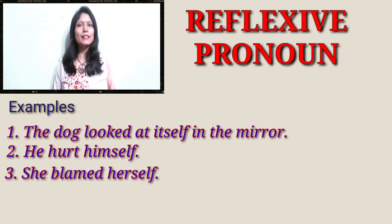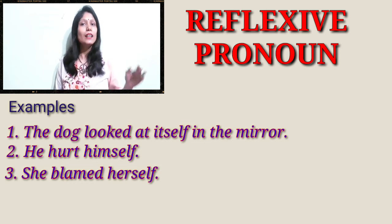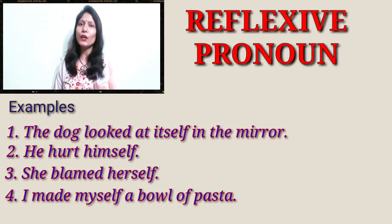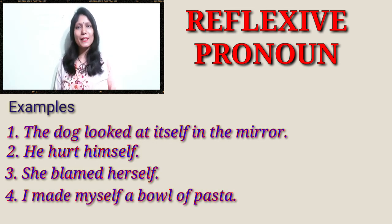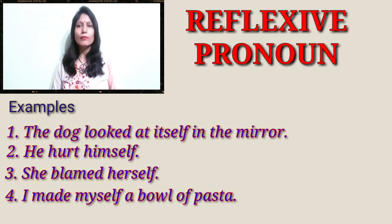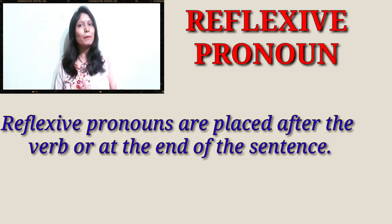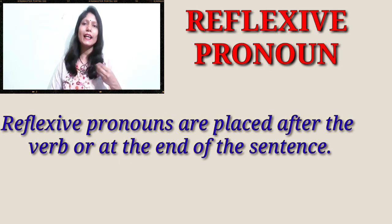Example three: 'She blamed herself.' Here 'herself' is the object — the action turns back on the subject. Example four: 'I made myself a bowl of pasta.' Again, the action turns back on the subject. You must have noticed that in all these sentences, reflexive pronouns are placed just after the verb or at the end of the sentence. That is the tip: reflexive pronouns are placed after the verb or at the end of the sentence.